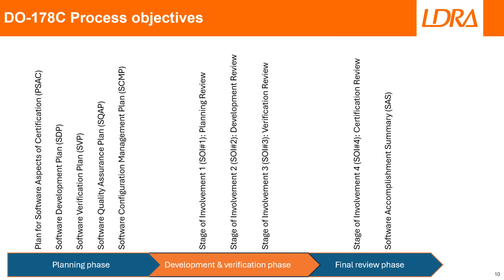Collectively, the DO-178C planning documents provide a comprehensive framework for the development and certification of airborne software. They are intended to ensure that all activities are planned, controlled and verified according to requirements. There are also four stages of involvement reviews specified by DO-178C, designed to ensure that software development processes and outputs adhere to the document's stringent requirements. These are policed by the certification authorities by means of SOI audits.